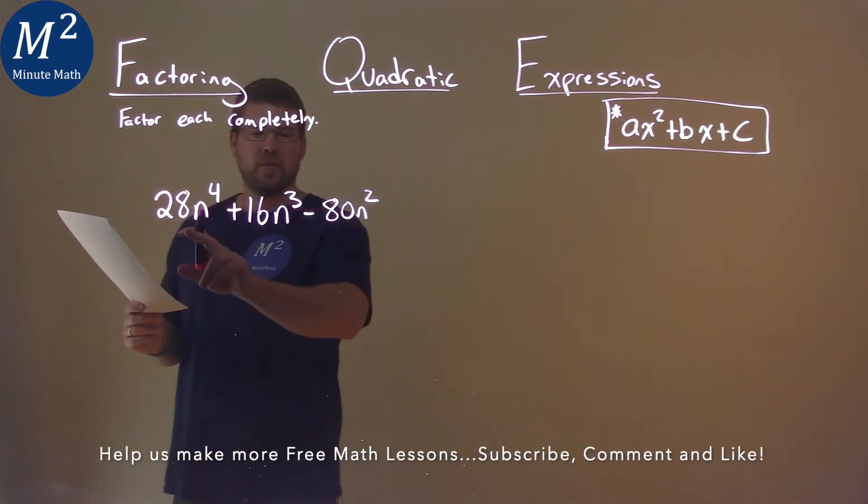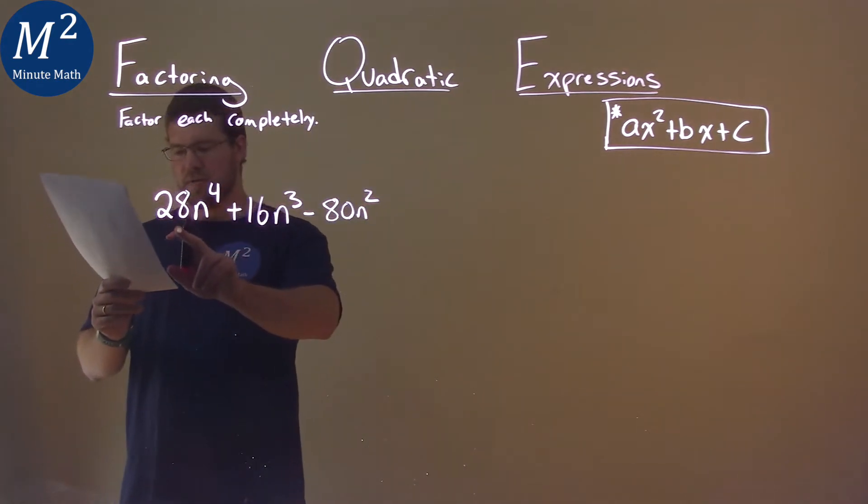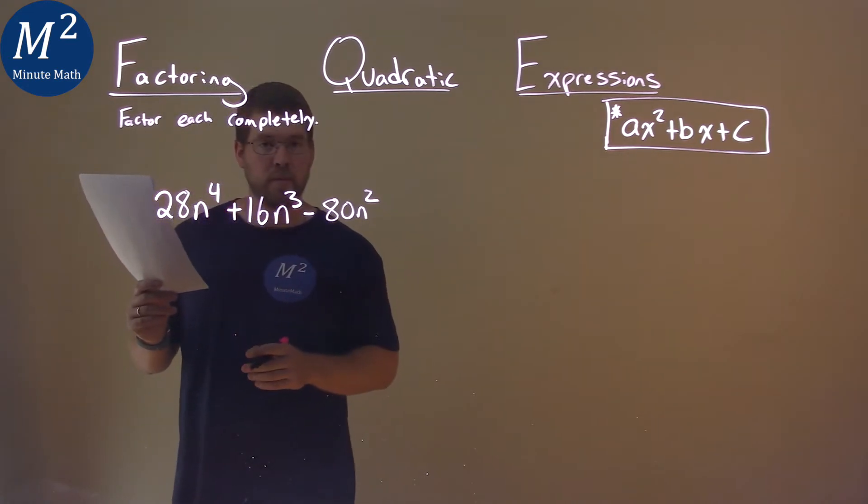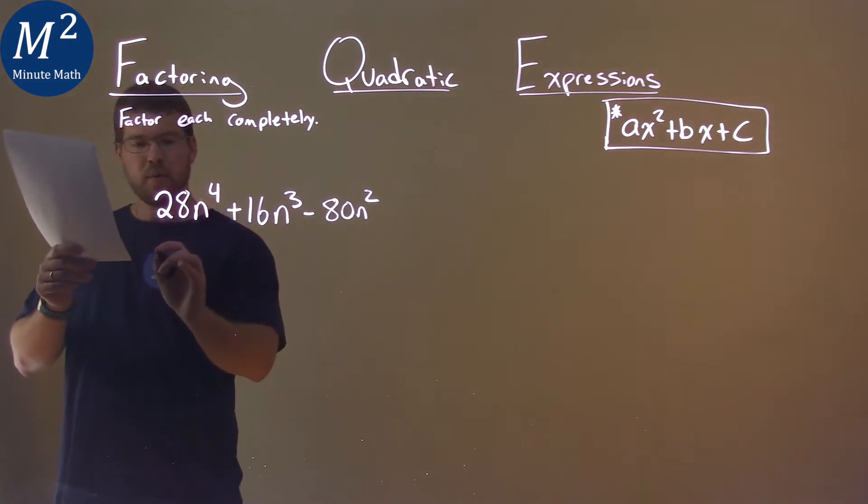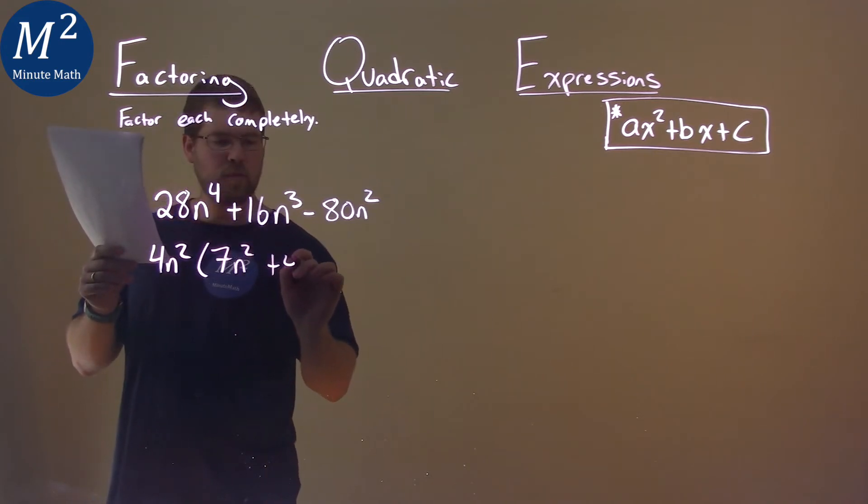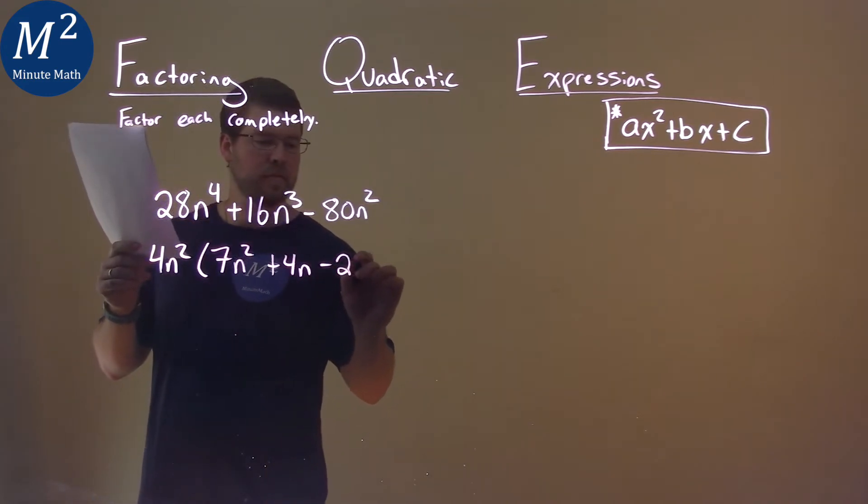Well, first thing I notice, 4 goes into 28, 16, and 80. And all parts actually have an n squared as well. So I'm going to pull that out, and I pull out a 4n squared from all parts, and we're left with a 7n squared plus 4n minus 20.